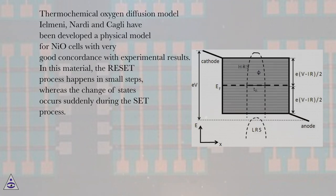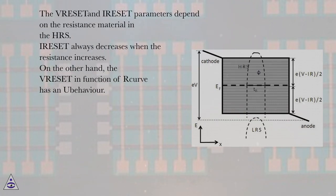In this material, the reset process happens in small steps, whereas the change of states occurs suddenly during the set process. The VRESET and IRESET parameters depend on the resistance material in the HRS.